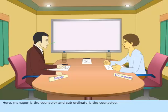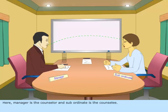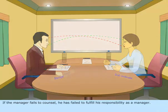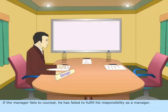Here, the manager is the counsellor and the subordinate is the counselee. If the manager fails to counsel, he has failed to fulfil his responsibility as a manager.